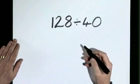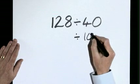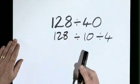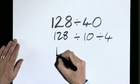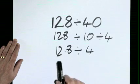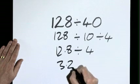128 divide by 40. Divide by 10. Divide by 4. 128 divided by 10 is 12.8. Still to divide by 4, 3.2.